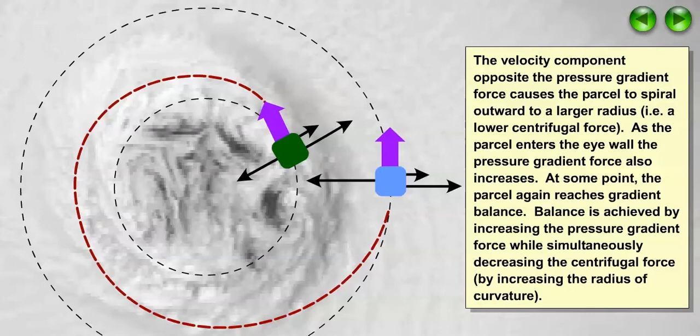As the parcel enters the eye wall, the pressure gradient force also increases, and at some point the parcel again reaches gradient balance thanks to the increasing pressure gradient force and decreasing centrifugal force that occurs as the radius of curvature gets larger.